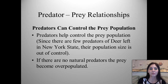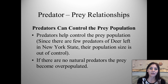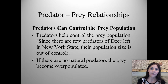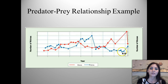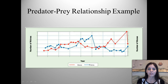Predators help to control the prey population. Since there are few predators of deer left in New York, their population is out of control — that's one reason we have legalized deer hunts. We removed their natural predator, the gray wolf, and the deer population went unchecked and increased exponentially. If there are no natural predators, the prey becomes overpopulated. For example, with moose as prey and wolves as predators: as the moose population increases, the wolf population increases; as the moose population decreases, the wolf population decreases as well.